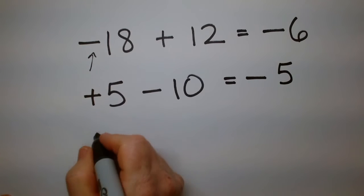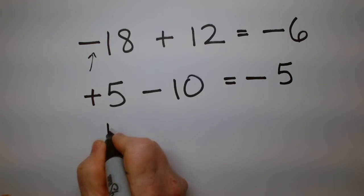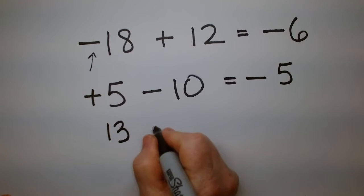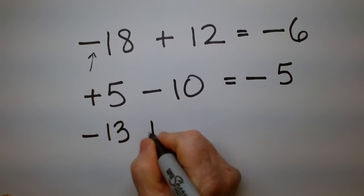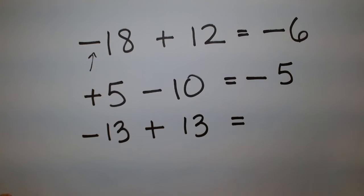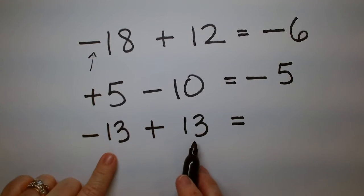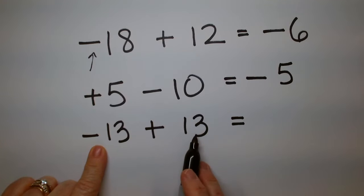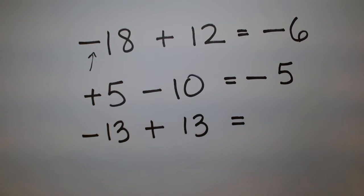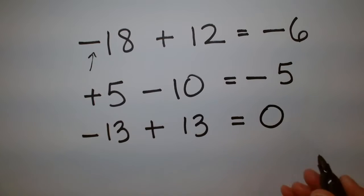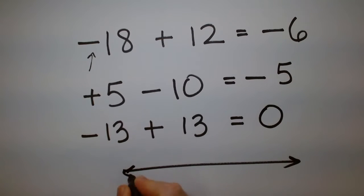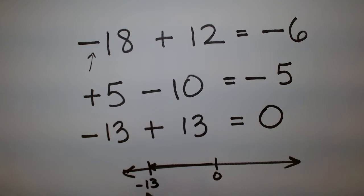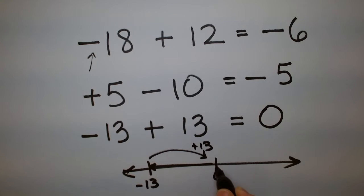What if we have negative 13 plus 13? What if they're the same number? That means they cancel out. You owed $13 and you paid $13, so this is 0. On our number line, here's the 0. You were in debt $13, and then you had $13, so now you're back to 0.